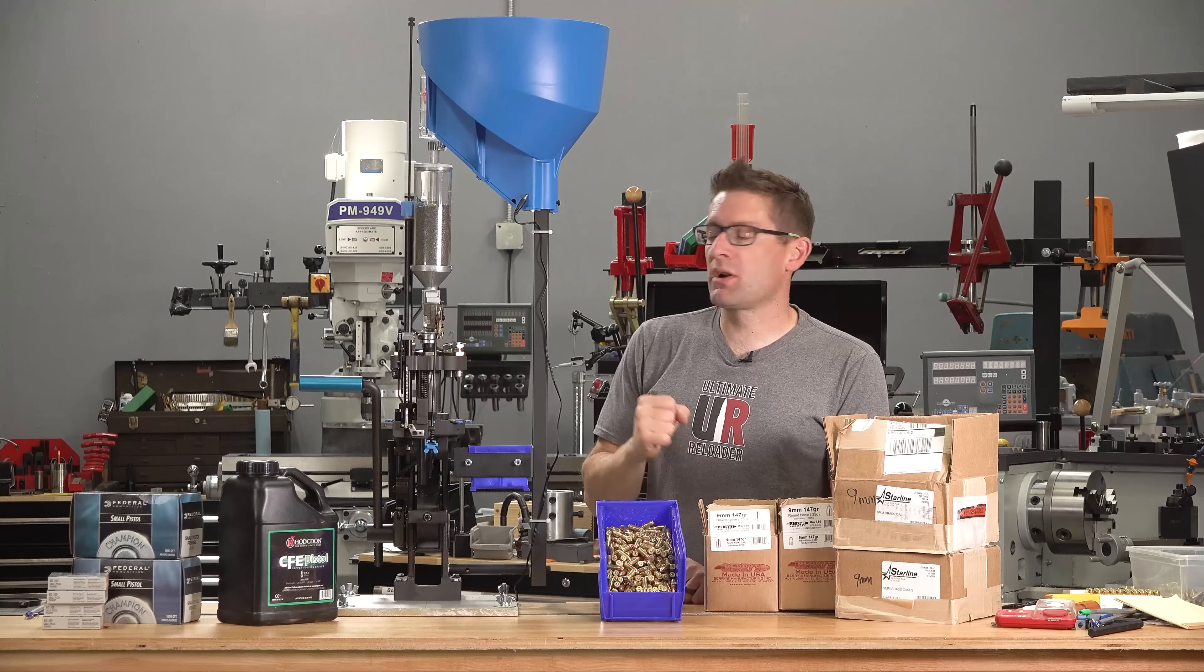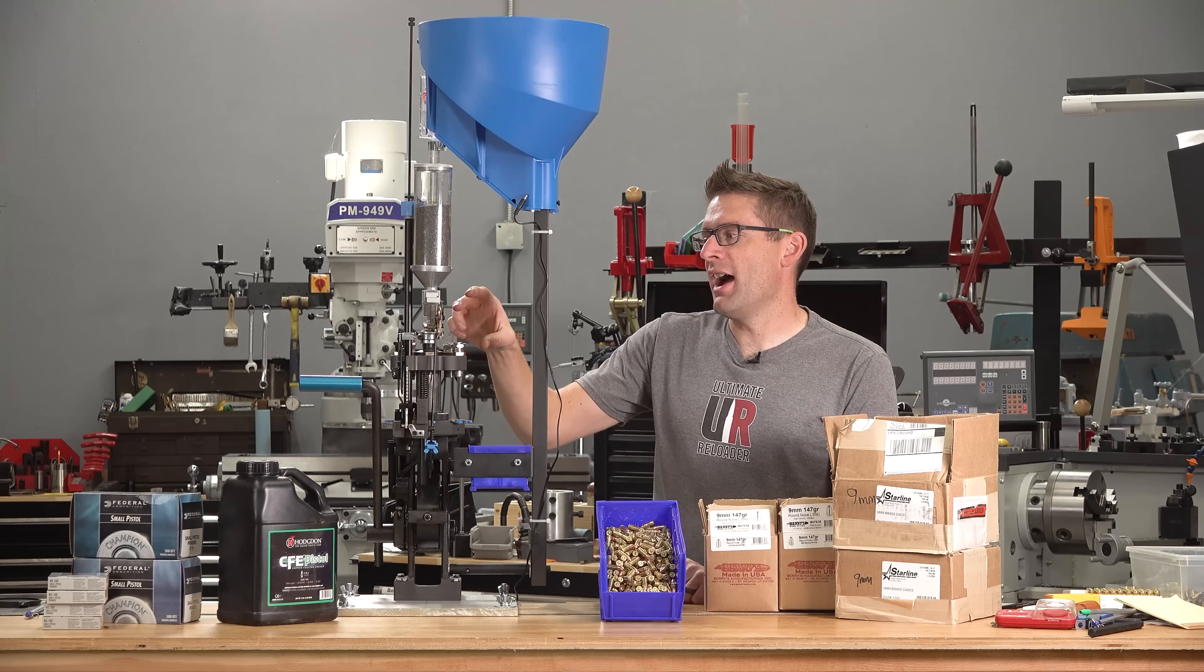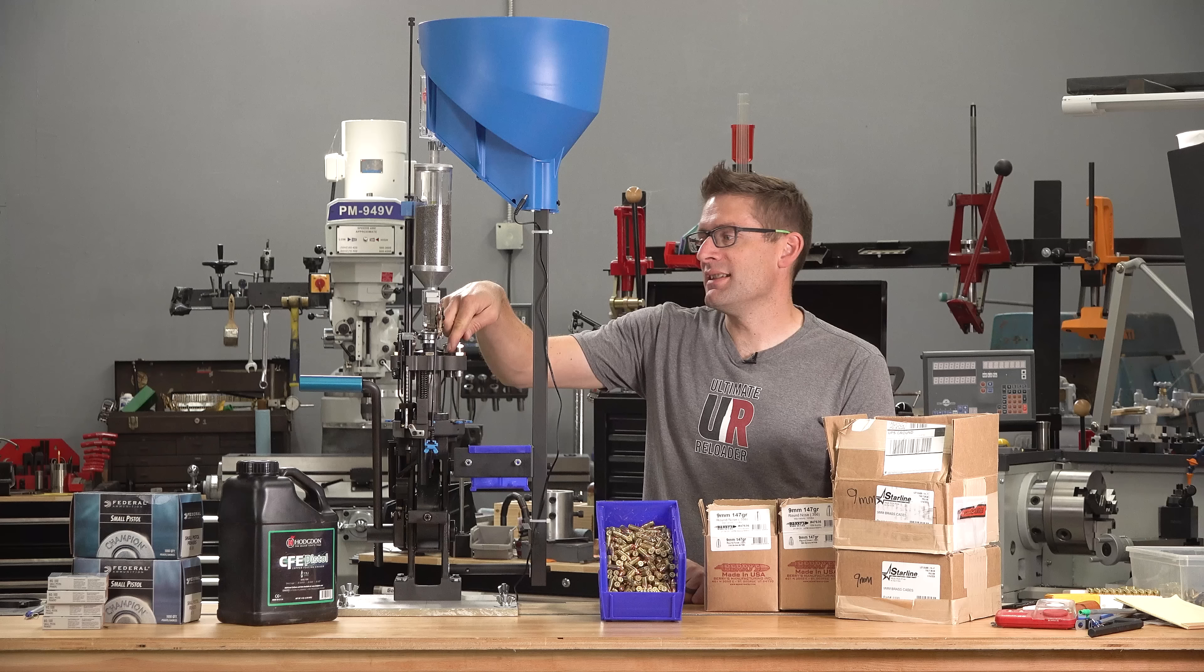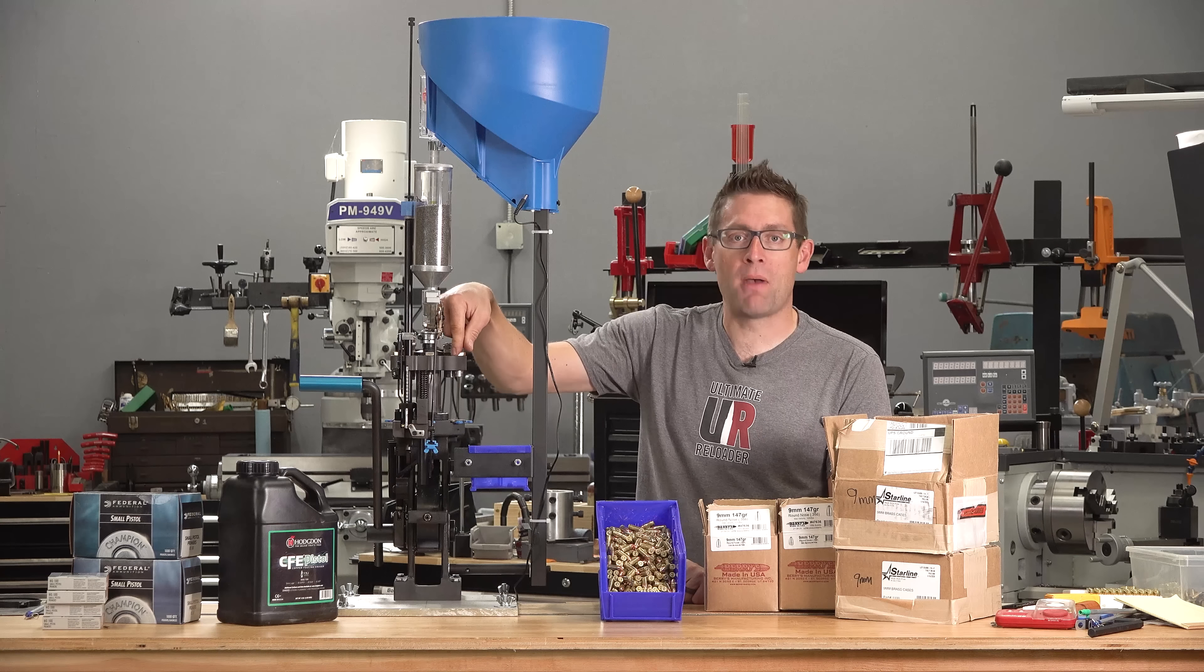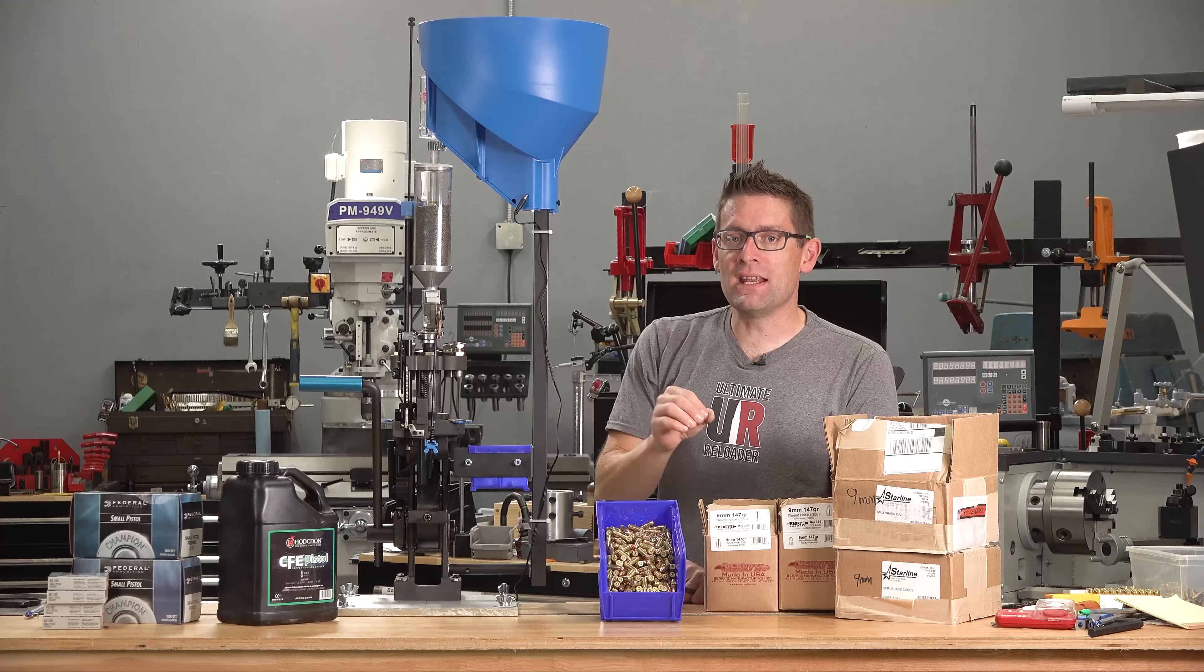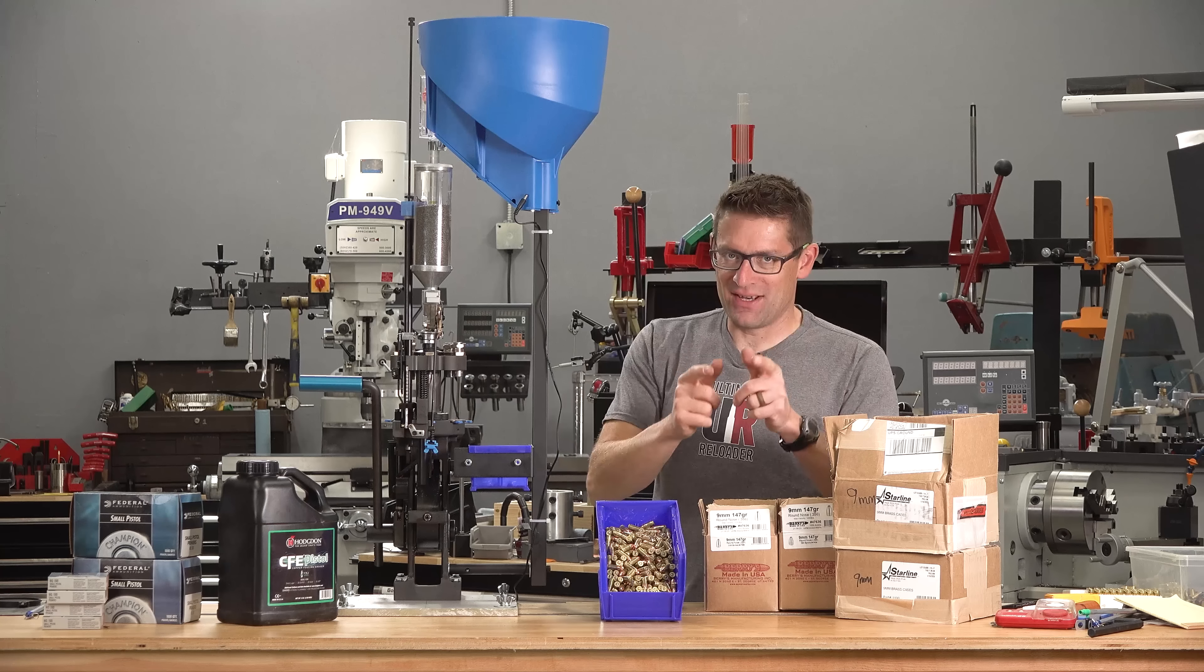So in order to accomplish that, we're going to need to free up an extra station. Depending on how you number the stations, we've got in station number seven the crimp die, in station number six the bullet seeder, and then station number five is open. What we're going to do is in station number five put the magnetic powder check die. In station number six we're going to put the bullet feed die, and then we're going to combine the seeding and crimping operations in station number seven, which is absolutely fine. This is a high volume loading scenario, let's get to it.